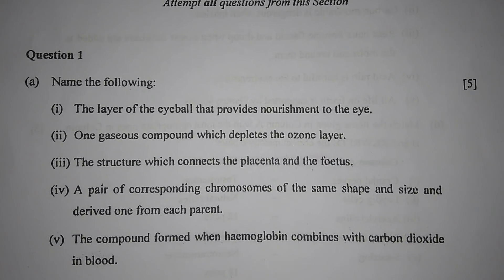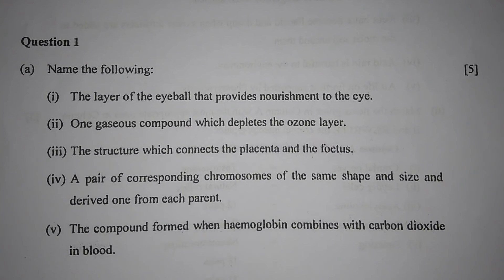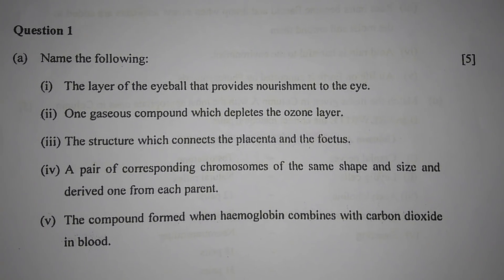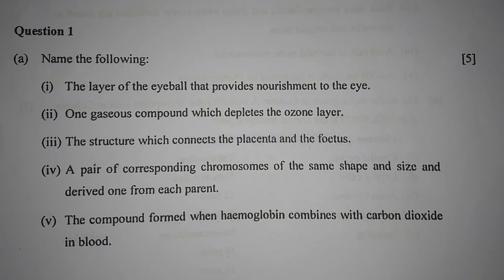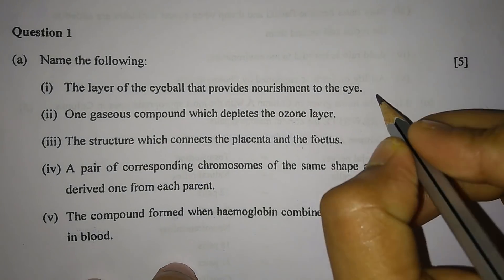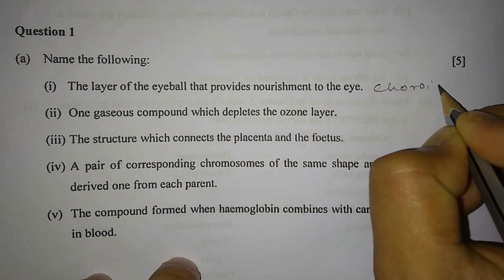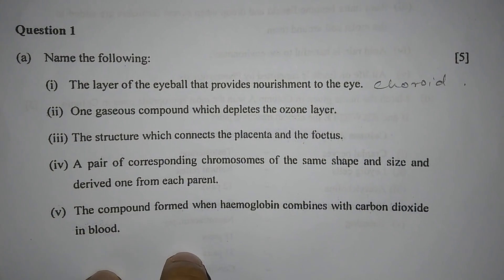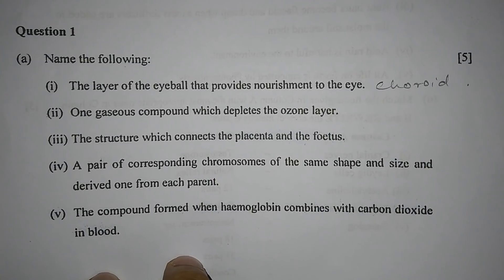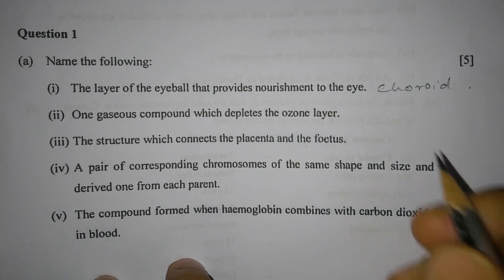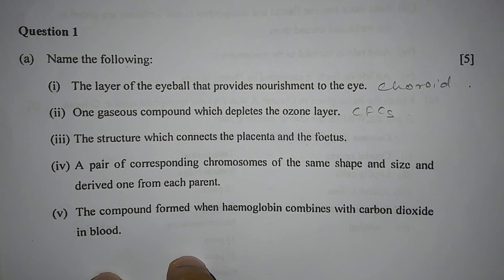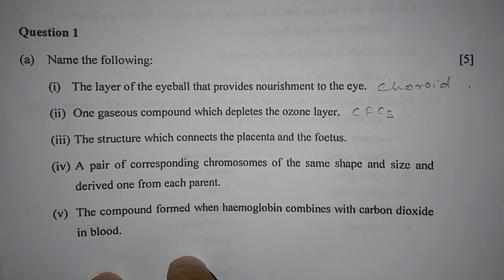Question 1a: Name the following. Number 1 — the layer of the eyeball that provides nourishment to the eye is the choroid. Number 2 — one gaseous compound which depletes the ozone layer is the CFCs.